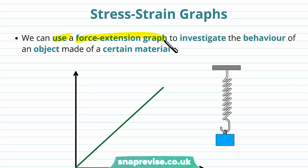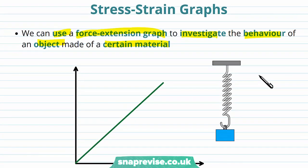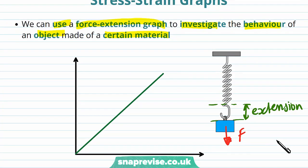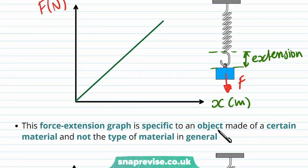We can use a force extension graph to investigate the behavior of an object made of a certain material. For example, we can investigate the behavior of a spring. When we apply a mass to the spring it experiences a tensile force F, and because of this tensile force the spring extends. If we measure the extension for various forces we can plot a graph of force against extension, getting a straight line — a linear relationship because the spring is obeying Hooke's law.